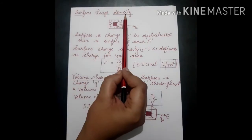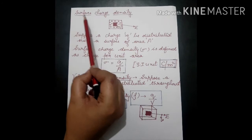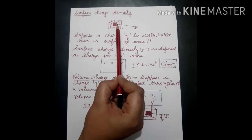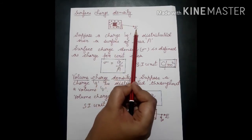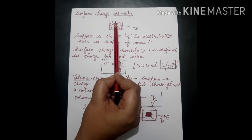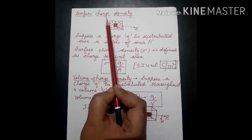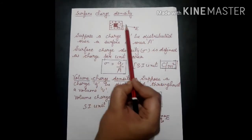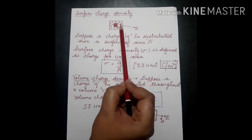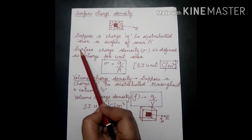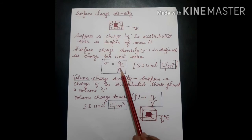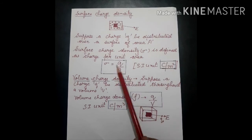Next is surface charge density. As the name suggests, we consider a surface where DS is a very small surface element, and we find the electric field at a point due to this small surface. Suppose a charge Q is distributed over a surface of area A. Surface charge density, denoted by sigma (σ), is defined as σ = Q/A — charge per unit area. The SI unit is coulombs per meter squared (C/m²).